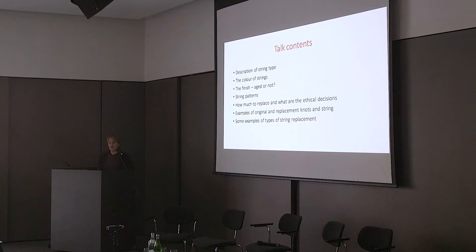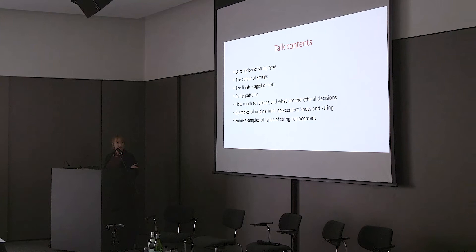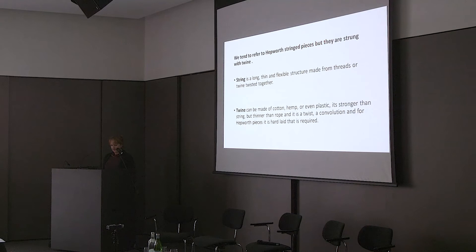So I'm going to cover these elements here, because it's quite an interesting area — the idea of strings. Strings are all becoming worn out, and there's a lot of conversation about what to replace, what not to replace, and how to replace what there is. I haven't got my notes here, so I'm going to wing this one. Looking at the description of string: the colour, the finish, whether it should be aged or not, string patterning, how to replace, and some examples of types of string replacements.